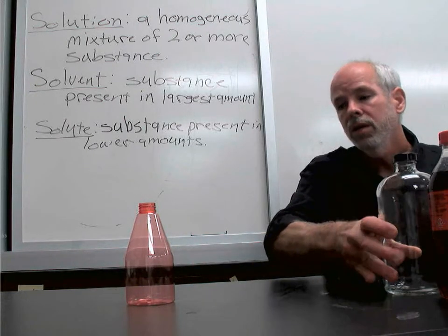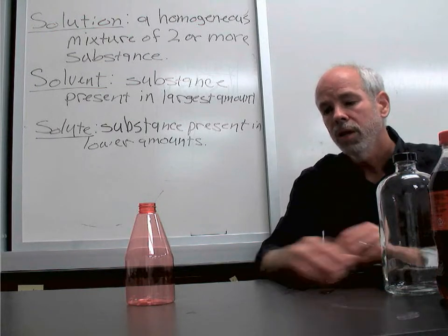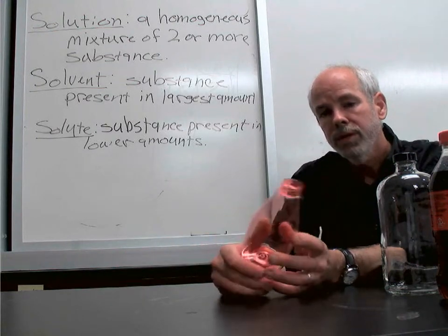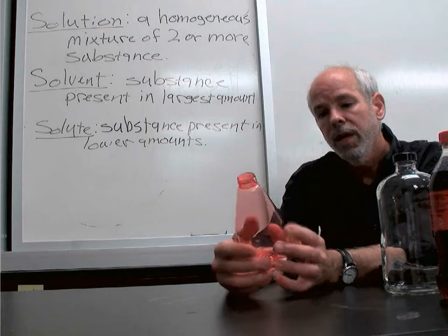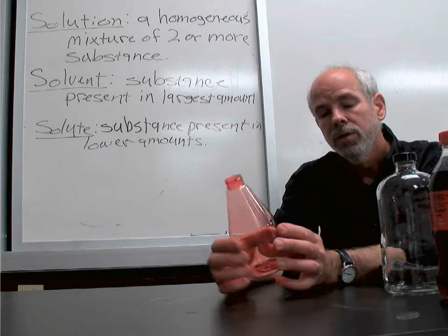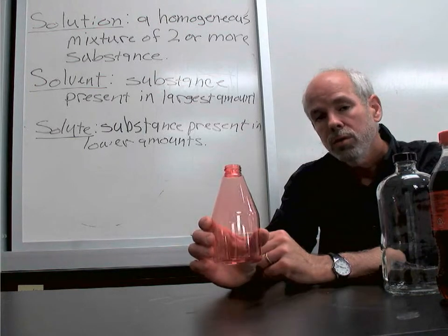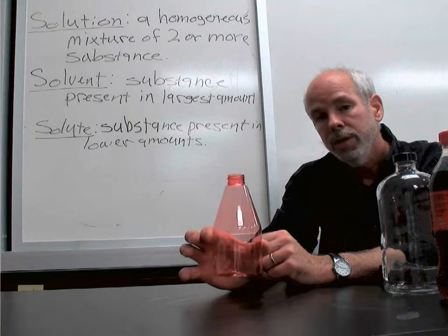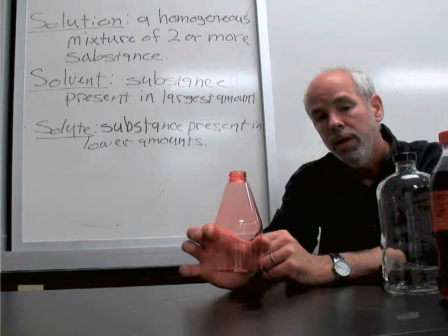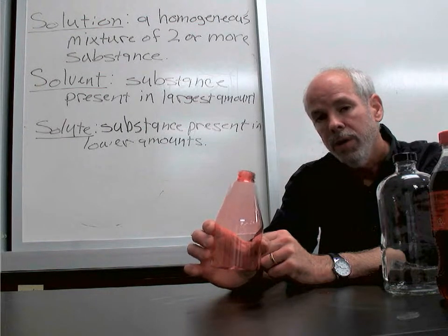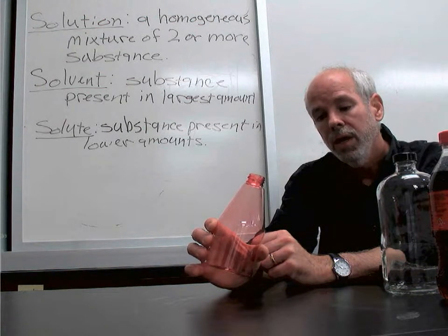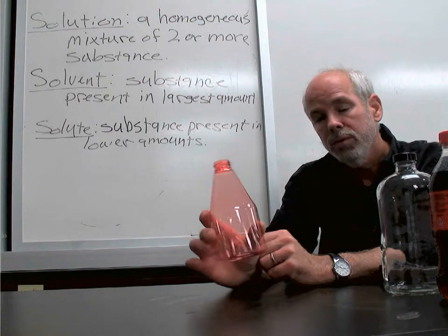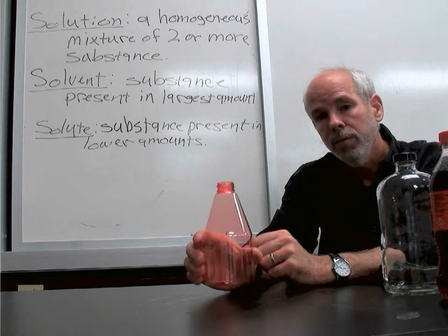Even solids can be mixtures. For example, I have this piece of plastic here and it's colored with a dye. So the solvent would be the main plastic component — high density polyethylene — and then the solute would be the red dye used to give it a little bit of color.